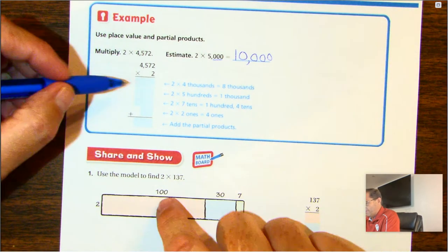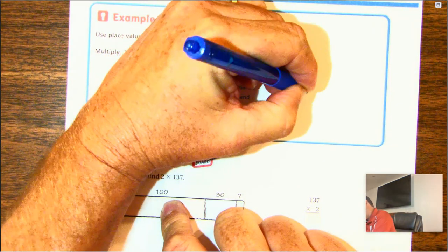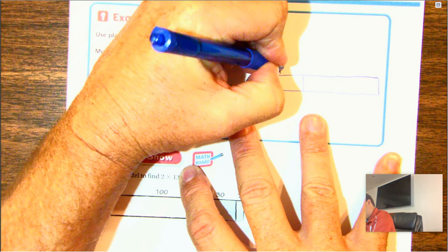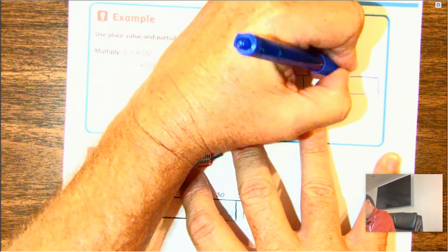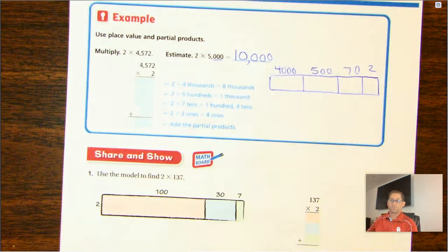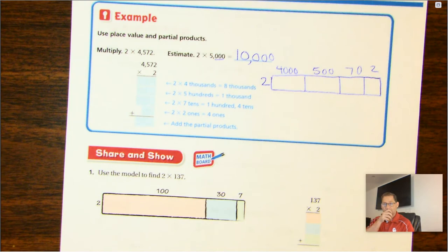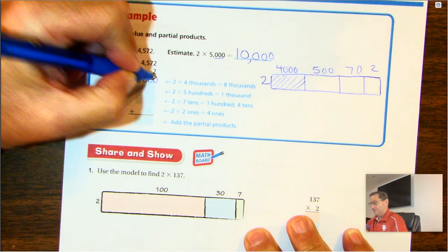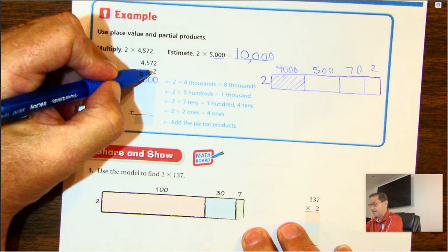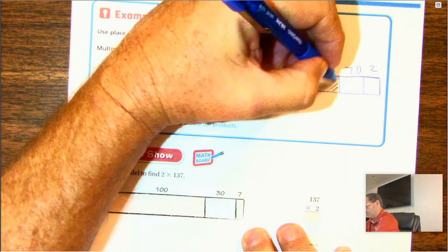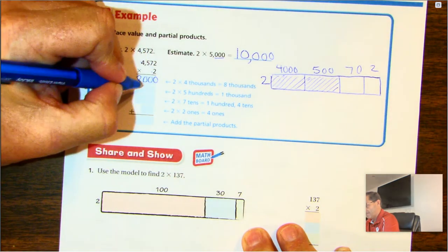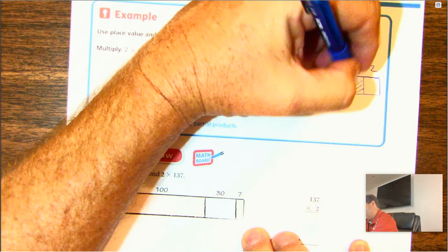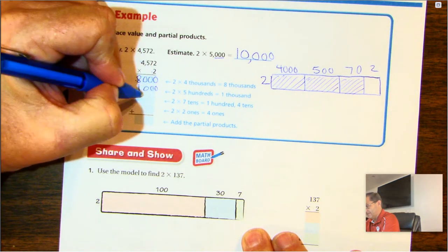Here we go. We have 4,572 multiplied by 2. So 2 times 4,000 is 8,000. Next, we go 2 times 500, which is 1,000. Next, 2 times 70, and 2 times 70 is 140.